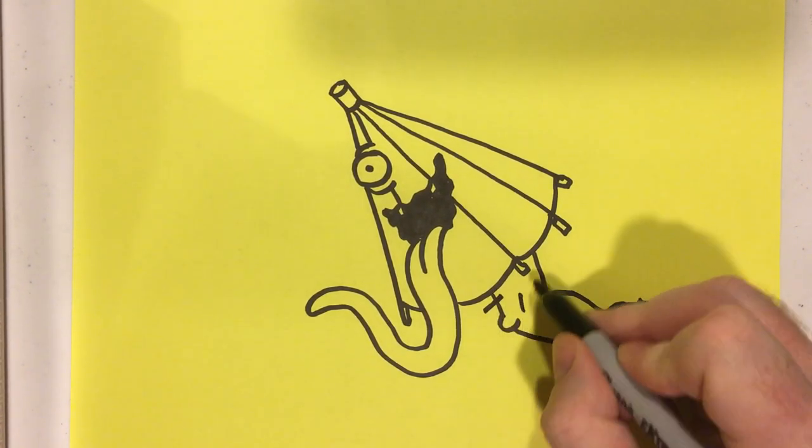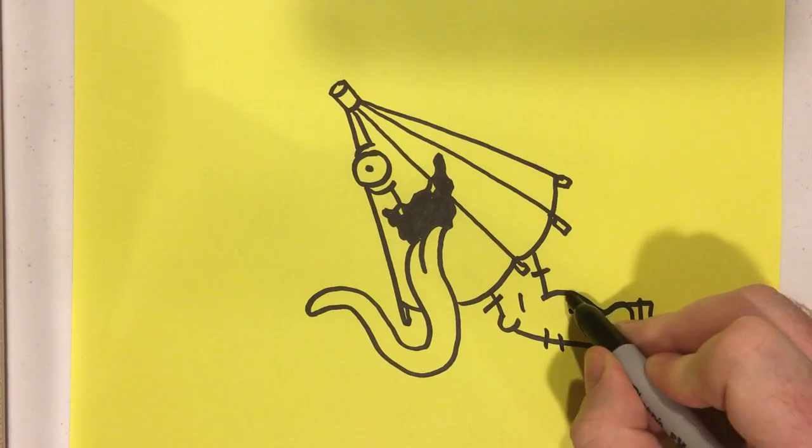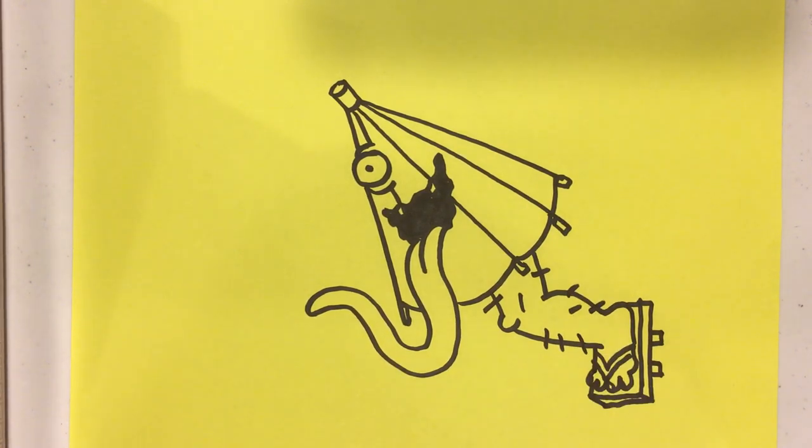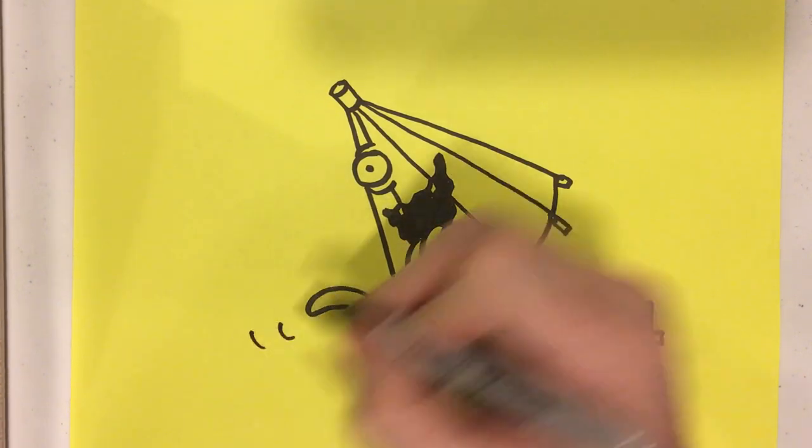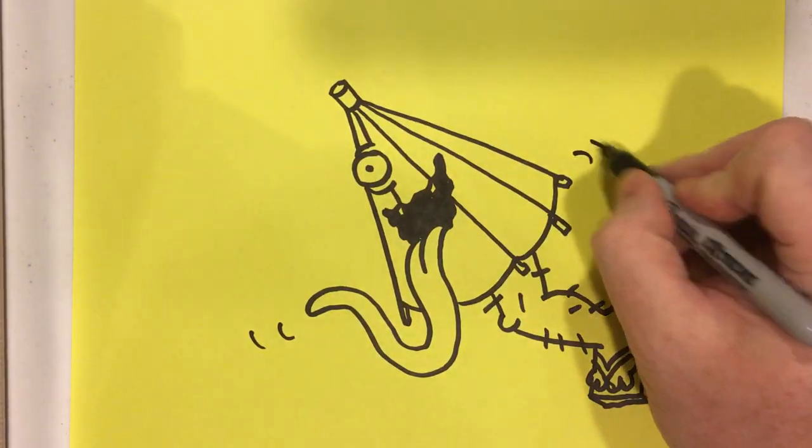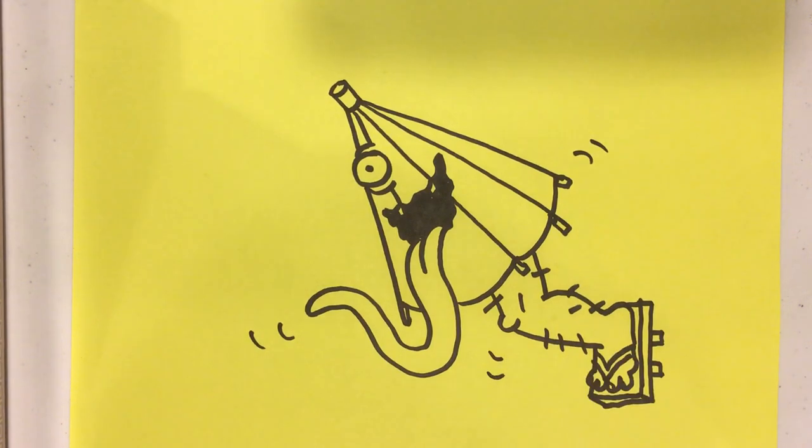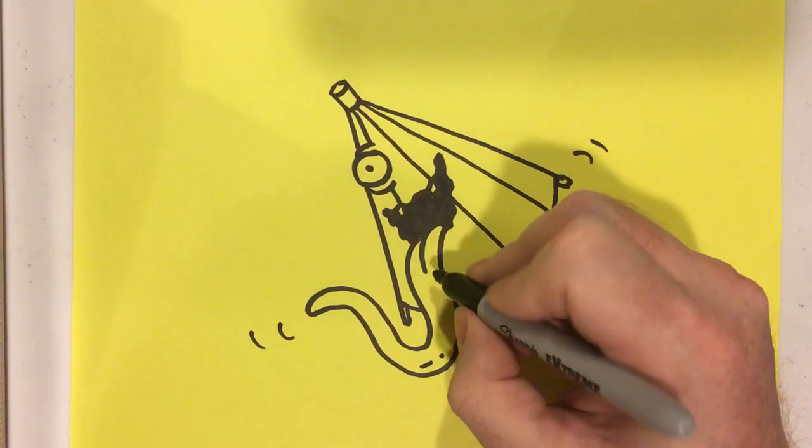We're going to draw some hair coming off of there. And it's leaping around. So we're going to give them some action lines. Maybe a couple of little lines on that tongue.